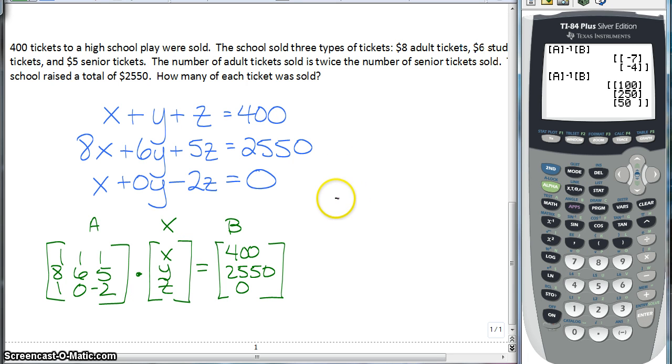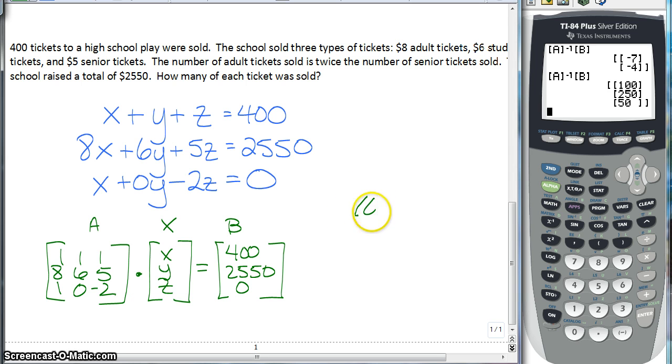Now it's a word problem, so make sure you answer the question. So we have 100 adult tickets. We have 250 student tickets and 50 senior tickets. Okay? And there you have it.